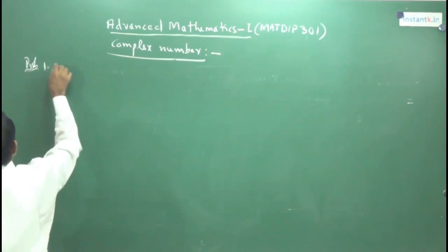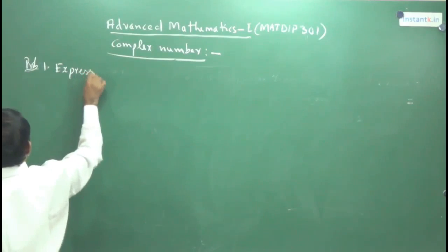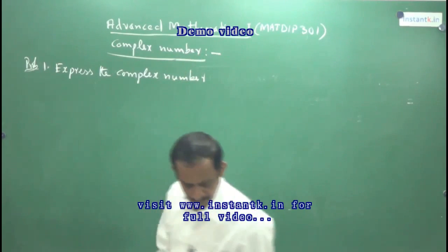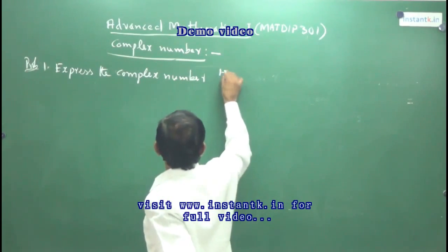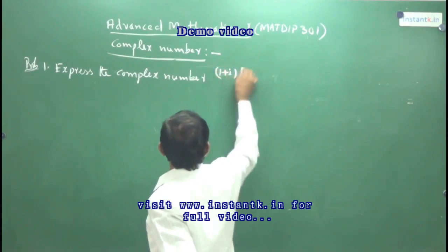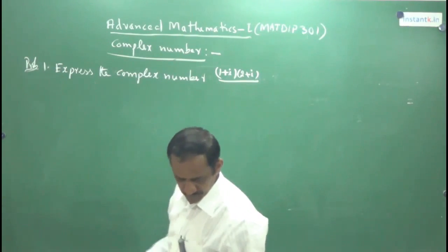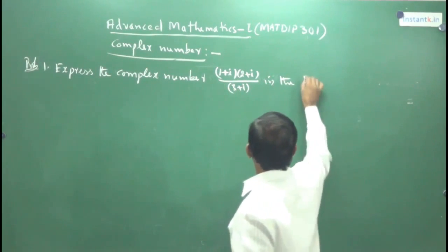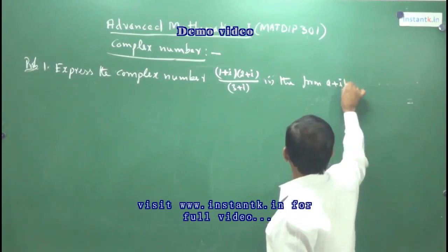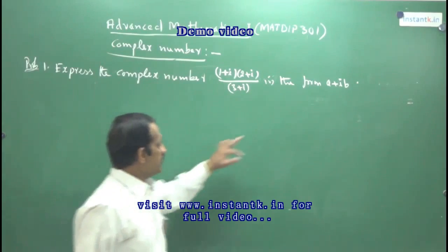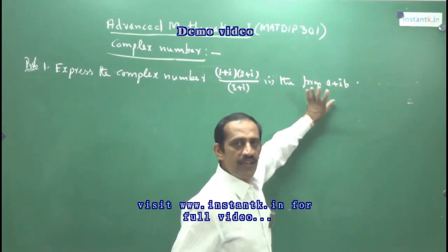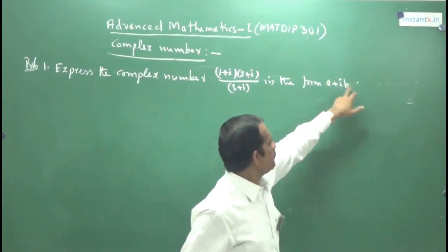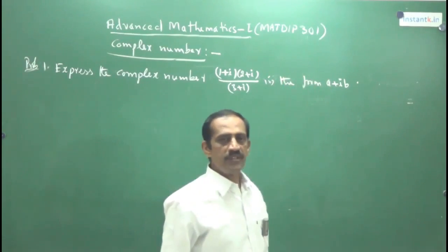Express the complex number — any complex number may be given. For example: express the complex number (1 + i) into (2 + i), divided by (3 + i), in the form a plus ib. Sometimes instead of writing x plus iy, they may give you a plus ib. Instead of x, a is there; instead of y, b is there. This form of a complex number is called the standard form of the complex number.